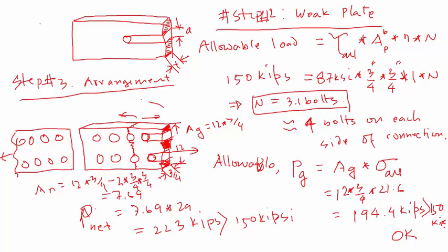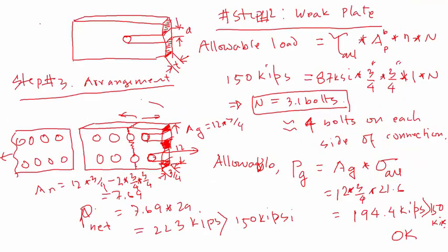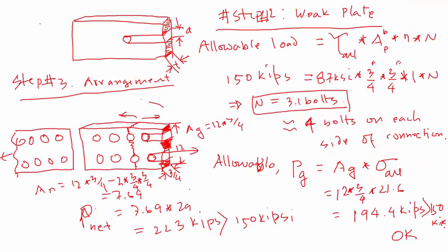To summarize the connection design problem: first, calculate for the weak bolt, find the number of bolts; then test for the weak plate, find the number of bolts, and use the maximum number so both the plate and bolt can handle the load. Then make the arrangement of bolts in a two-gage line as the problem asked. After arranging, go to the tensile test — because you're cutting holes, the plate might fail due to tensile loading. Test for it, and if it fails, you have to increase the number of bolts. In this case, it didn't fail.